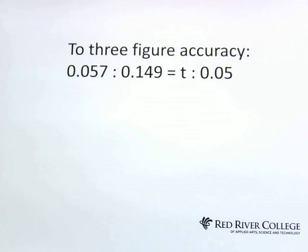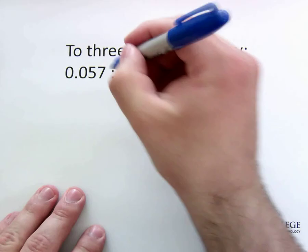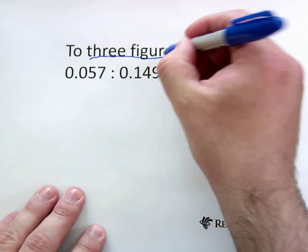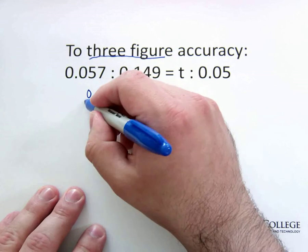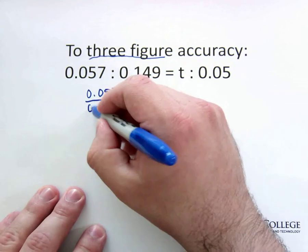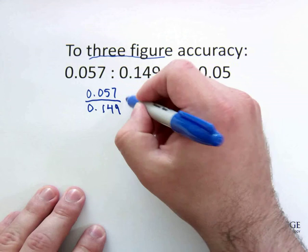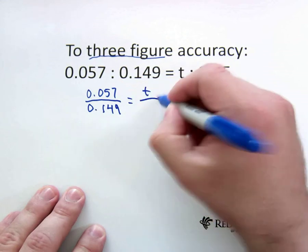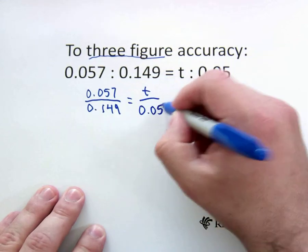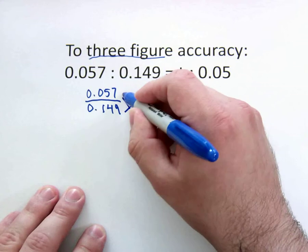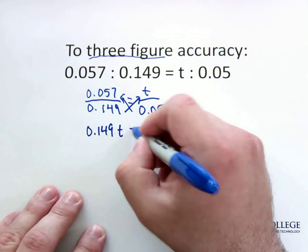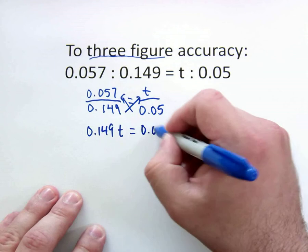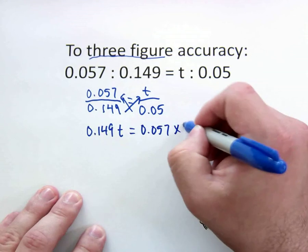Another one with decimals and three-figure accuracy. So first thing, let's make ourselves a fraction. So 0.057 over 0.149 is equal to t over 0.05. We will now cross multiply. So 0.149t is equal to 0.057 times 0.05.